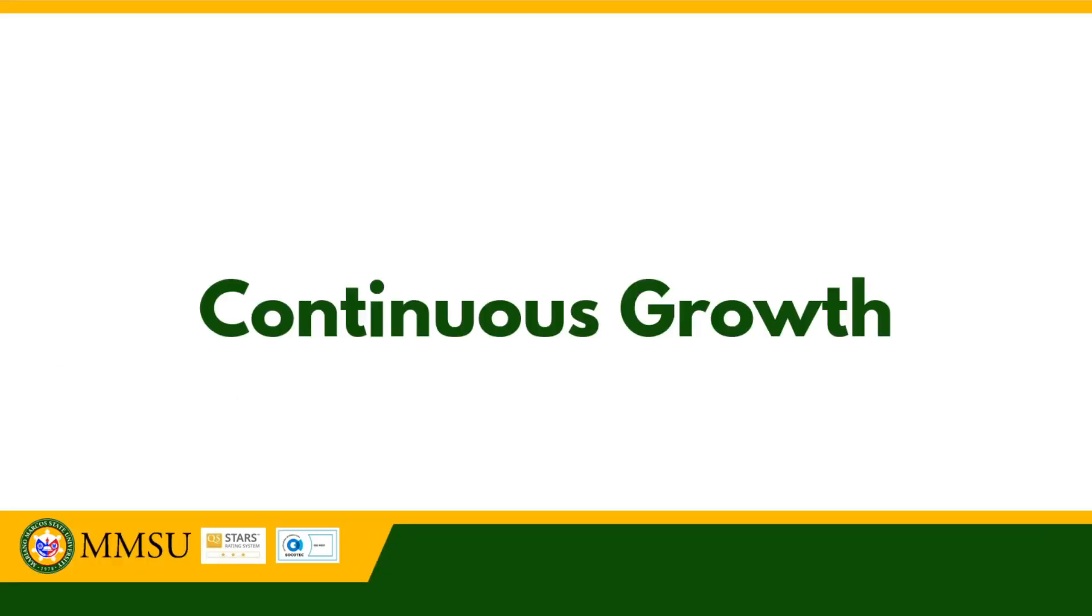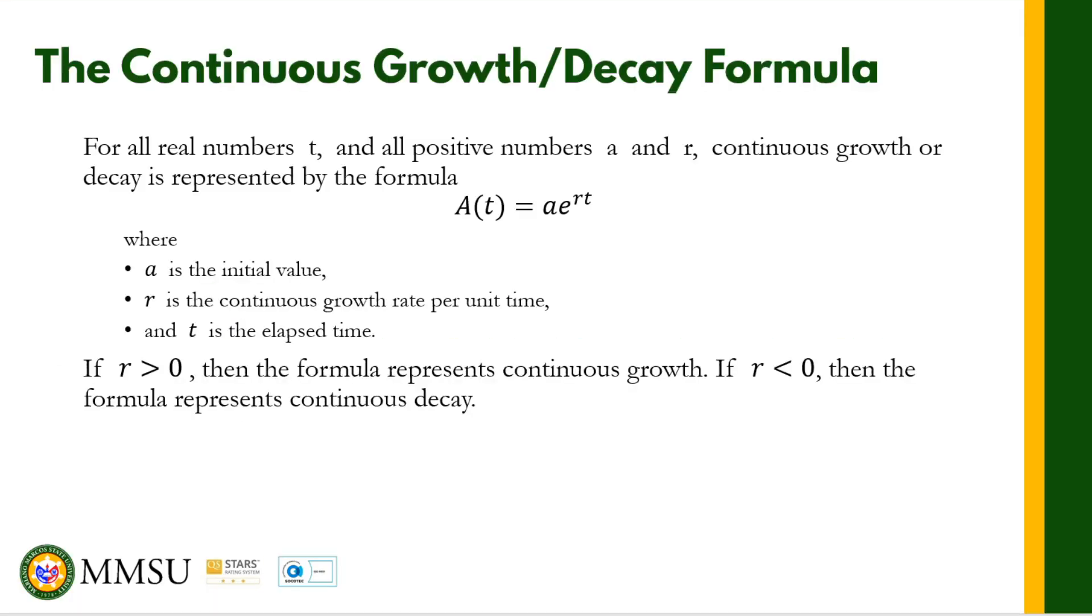The continuous growth formula is A_t = Ae^(rt). If you take a look at this one, e is already introduced as the base, the rate is already an exponent, with the independent variable t.